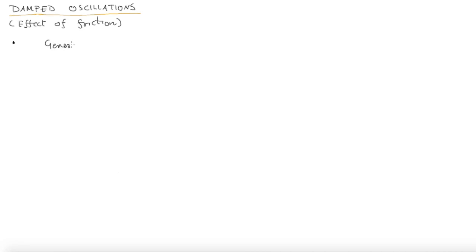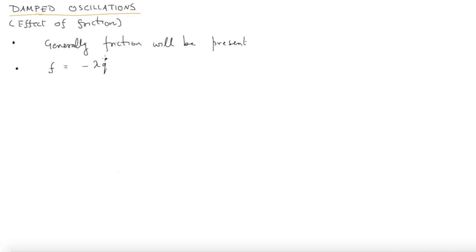Generally friction will be present, and when our oscillations are small the velocities will also be small. The damping forces — the frictional forces acting on the system — will also be proportional to the velocities. In the limit of small velocities, the generalized frictional forces will be of the form: proportional to the generalized velocity q̇, with a positive constant λ so that the force is opposite to the direction of motion.